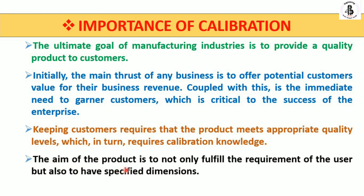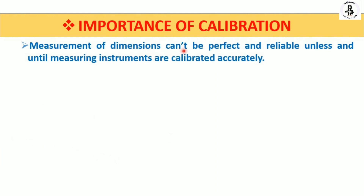The main aim of a product is not only to fulfill the requirements of the user but also to have specified dimensions. Dimensional accuracy is important, especially when working with assembly parts, because dimensional accuracy of any component used in assembly to make different kinds of machines is critical. Measurement of dimensions cannot be perfect and reliable unless and until measuring instruments are calibrated accurately. Accuracy and precision are important parts in the field of metrology and measurements.